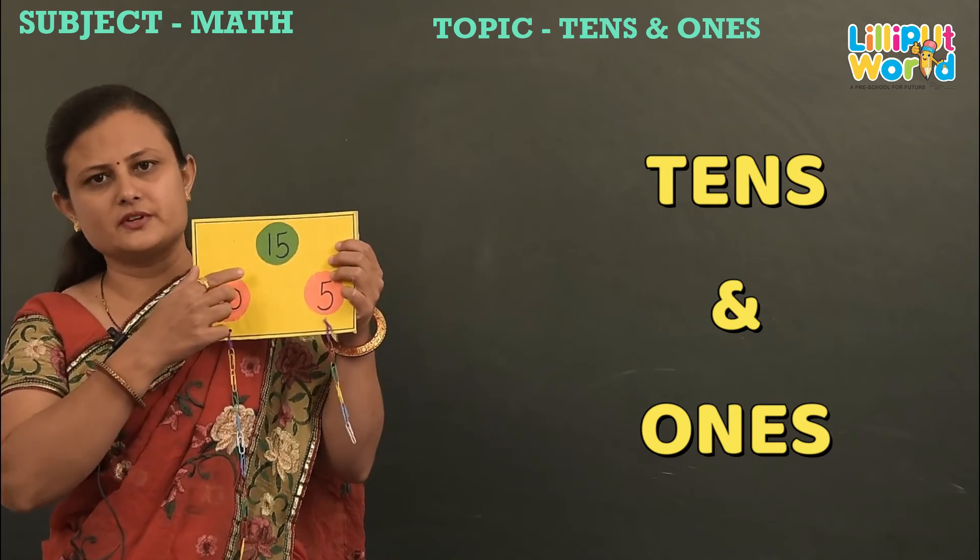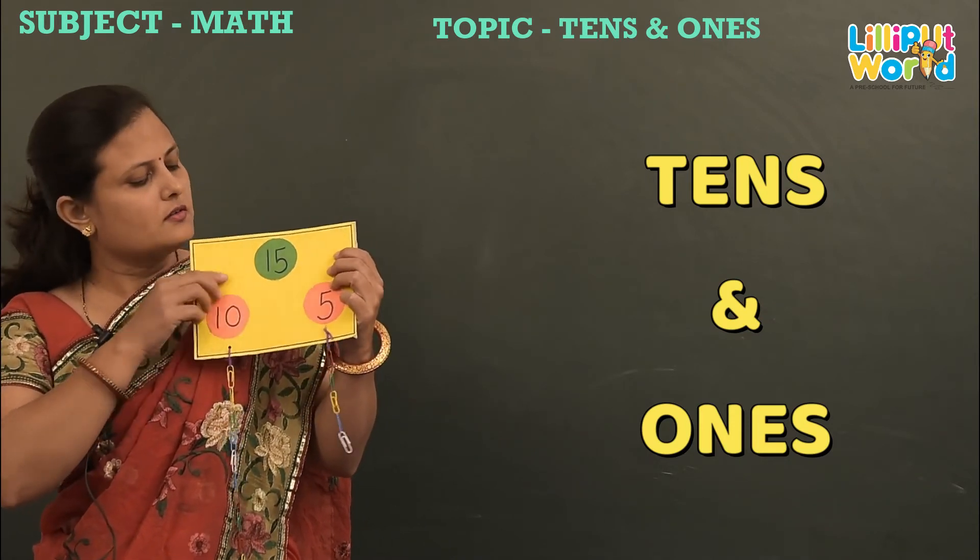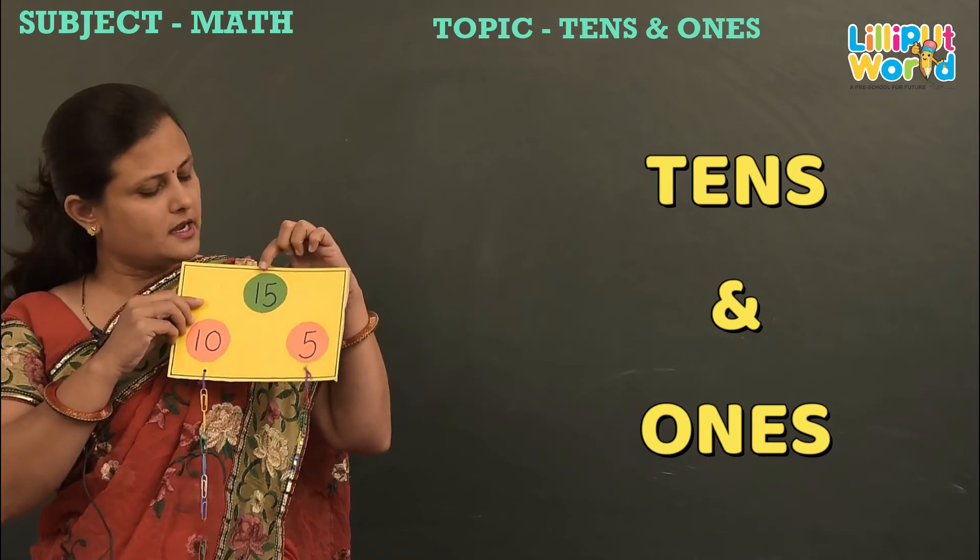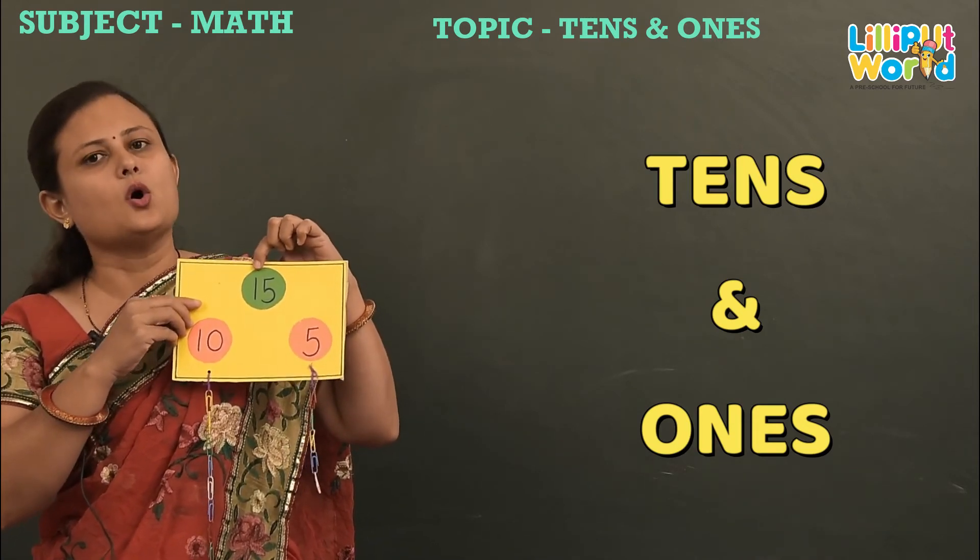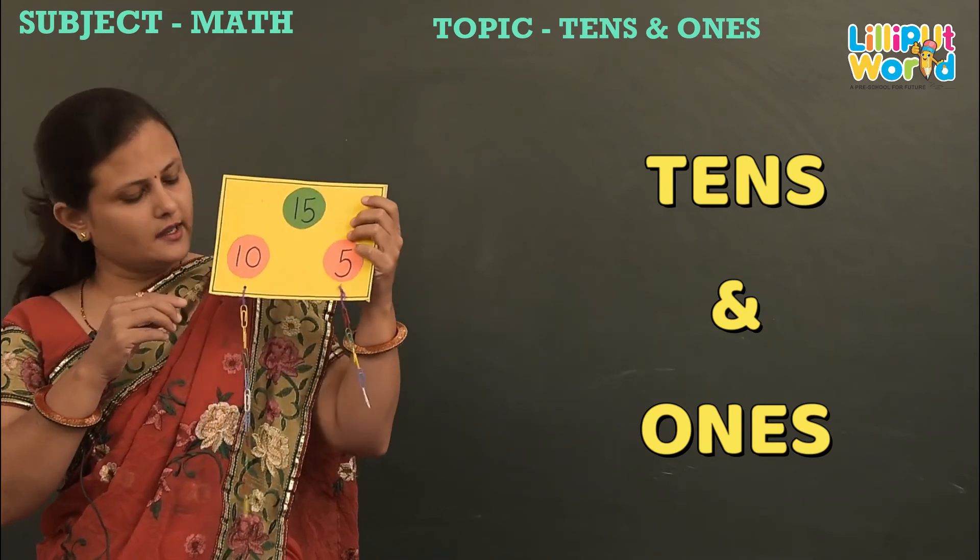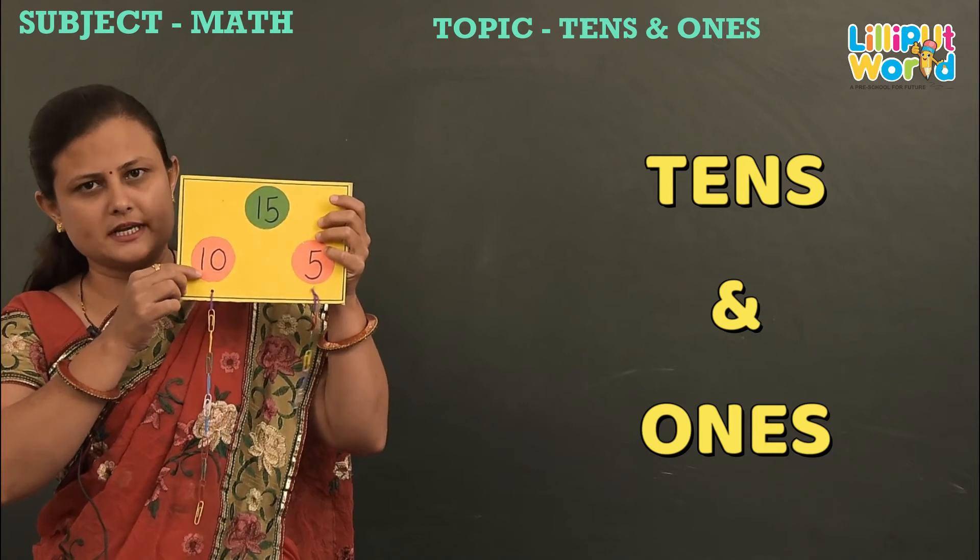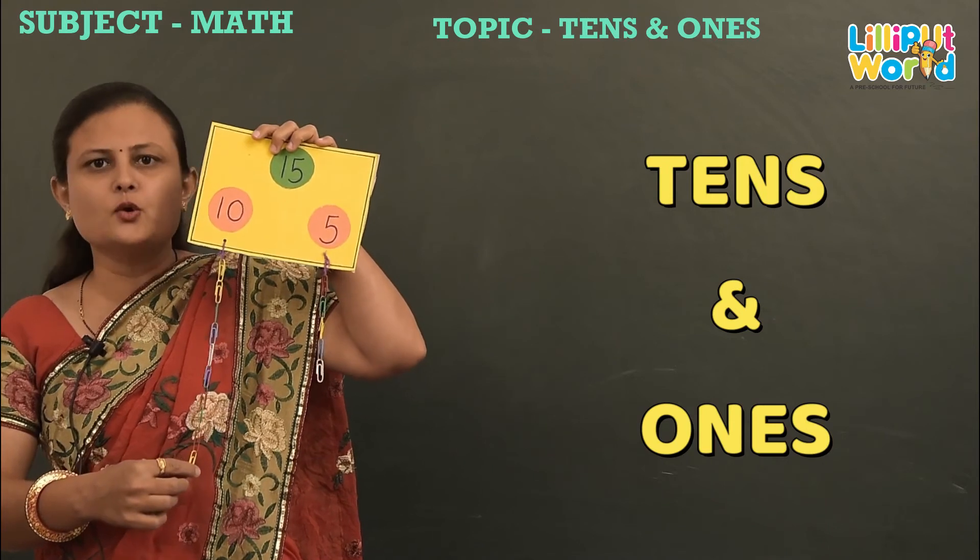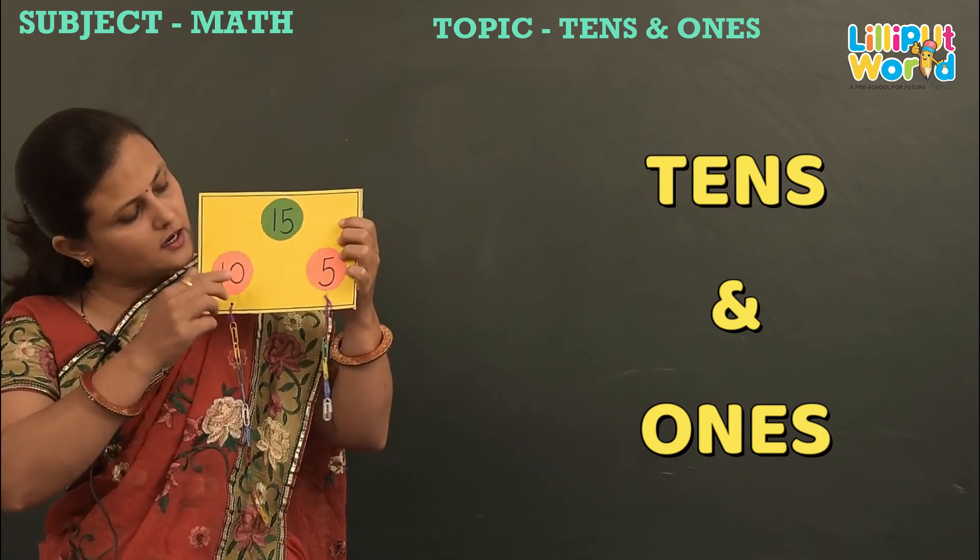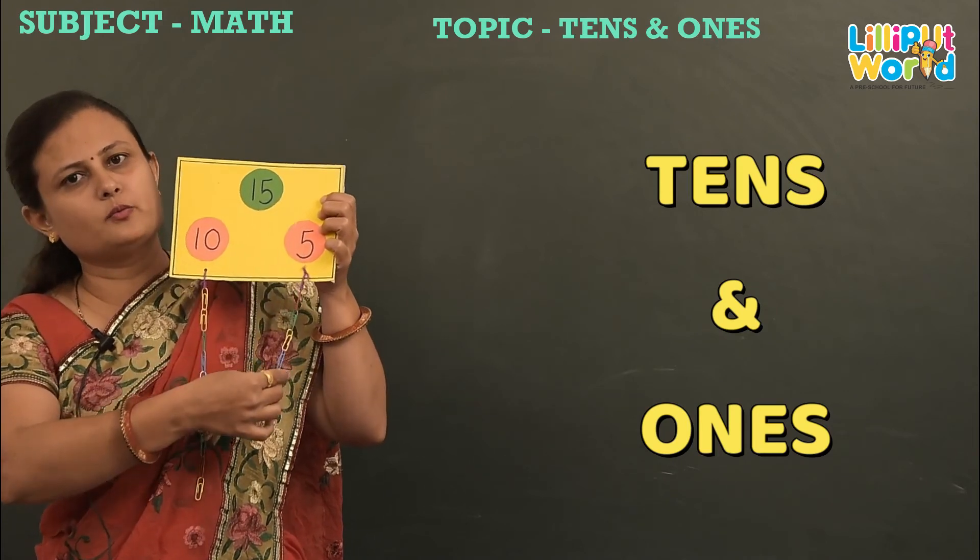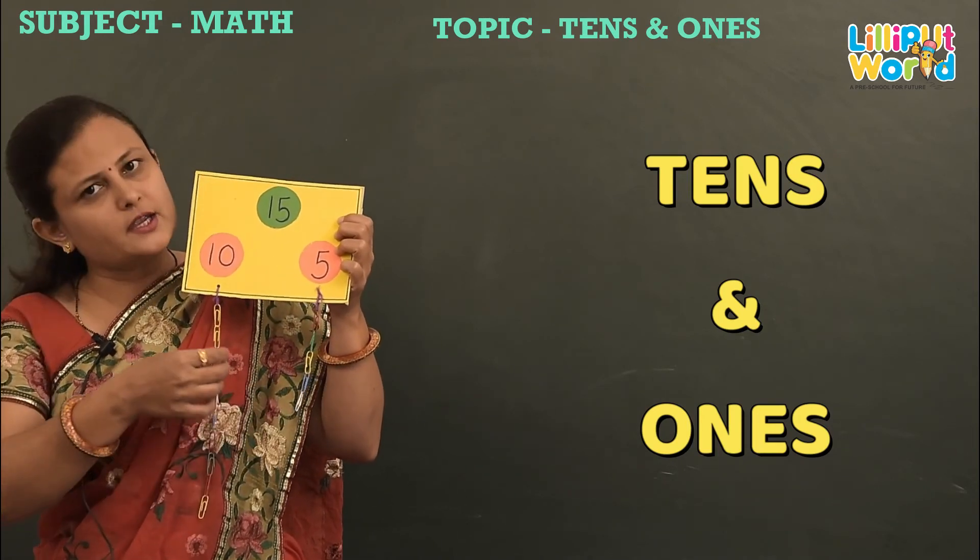Which number it is? Fifteen. So where is the number five? On ones place. And where is the number one? On tens place. Okay, so that way you can make your number ten. So you can make your number ten and how many U-pins you have to put to make? Ten U-pins. And here number five is there. So for five number how many U-pins you have to put? Five U-pins.